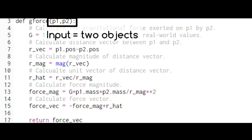In this case, our inputs are two objects in space, P1 and P2, and our output is the gravitational force exerted on P1 by P2. This function performs all the steps we just reviewed.